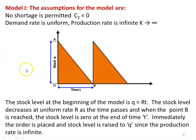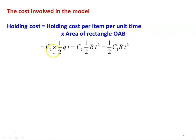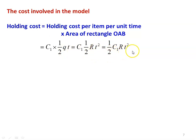Now we calculate the cost and optimize the inventory model parameters. The holding cost equals the holding cost per item per unit time multiplied by the area of triangle OAB, since the area represents the total number of items. This gives C1 times one-half Q times T. Substituting Q equal to R times T, the holding cost equals one-half C1 R T squared. The setup cost is simply C3. There is no shortage cost.